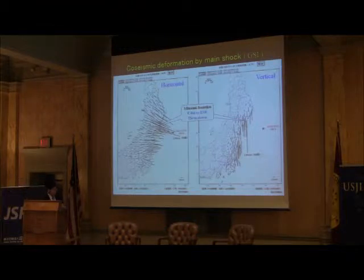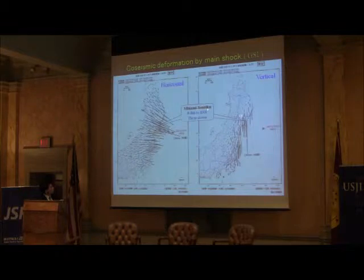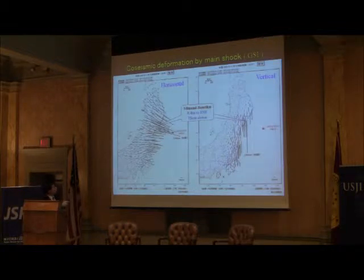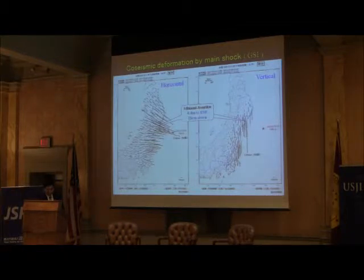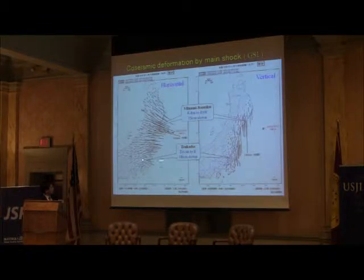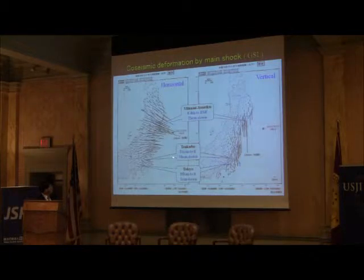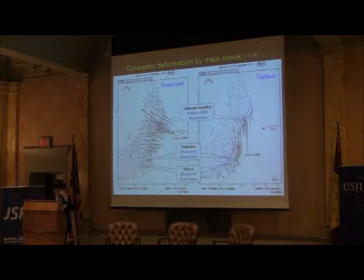Taking a typical point — Minami Sanriku town, as Dr. Sugawara mentioned — it moved 44.4 meters to the east-southeast and subsided 75 cm. I'm living in Tsukuba City: Tsukuba moved 50 cm to the east and 10 cm down. Even Tokyo moved 20 cm to the east and 5 cm down by this earthquake. It was a very, very big earthquake.